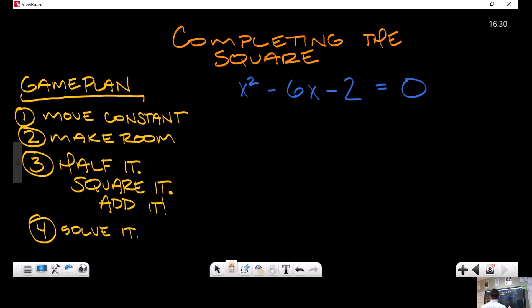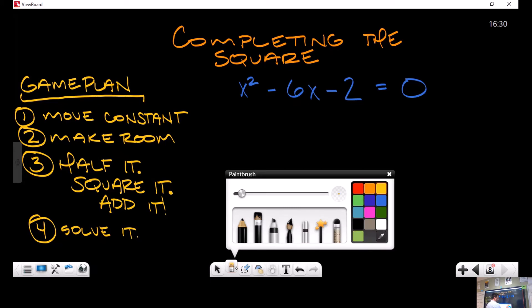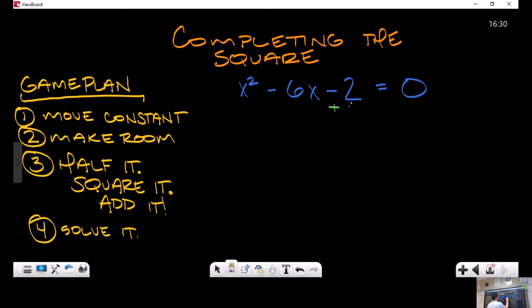This is obviously not something we can factor - the factors of 2 do not add to 6, we can't make that happen. So let's go ahead and make it happen with a perfect square. We're going to force it to happen by creating a perfect square.